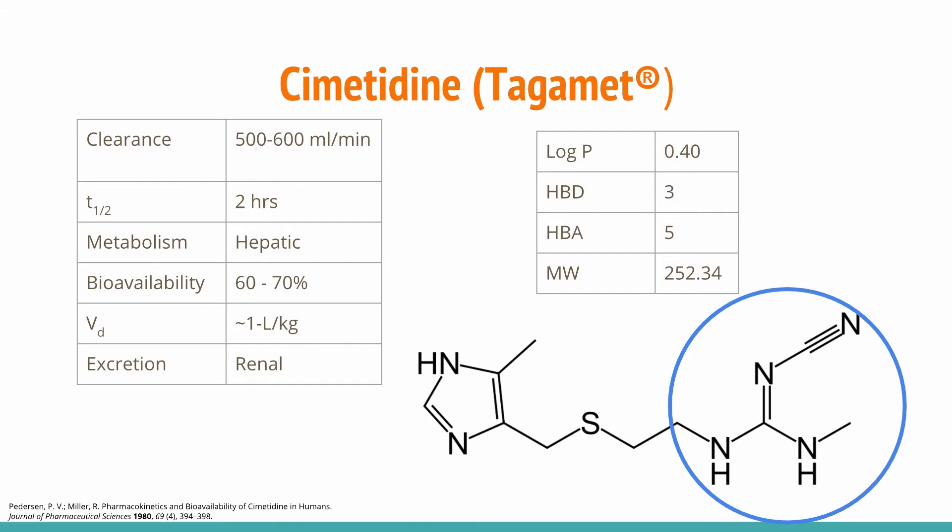Pharmacokinetic reports showed that cimetidine was a weak base and highly water-soluble based on its experimental log P value, and the compound also followed Lipinski's rules. Cimetidine showed high systemic clearance of about 500 to 600 milliliters per minute and was determined to have primarily renal clearance. The half-life was about two hours and the duration of action is roughly four to five hours. The volume of distribution has never been well quantified, but has been estimated to be on the order of one liter per kilogram, approximately equal to body weight.